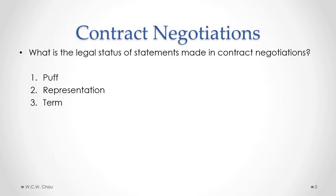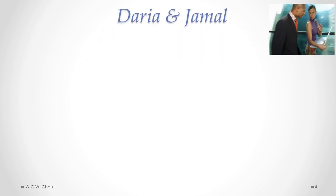In many contract negotiations, there is a lot of back-and-forth communications between the two parties involved, and those communications have certain various legal status. The three different types are a puff, a representation, and a term. Let's go back to our friends Daria and Jamal to help us understand what is a puff versus a representation versus a term.